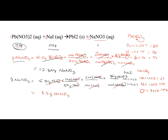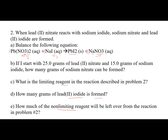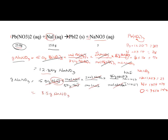Going back to our definition: the one that produces less product is the limiting reagent. Given the two amounts of NaNO₃ produced, therefore our limiting reagent is sodium iodide — NaI is our limiting reagent. So the answer to the first question: the limiting reagent is sodium iodide. The second question: how many grams of sodium nitrate is formed? Our answer is 8.5 grams of sodium nitrate. The amount of product formed is based on our limiting reagent.